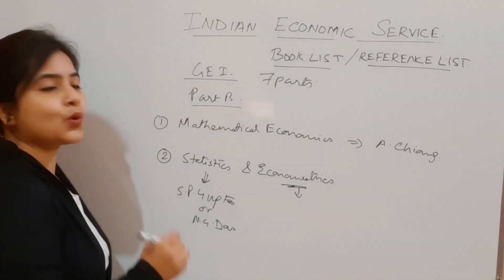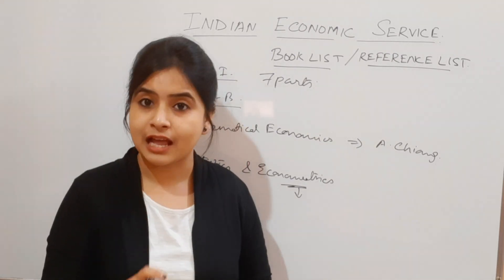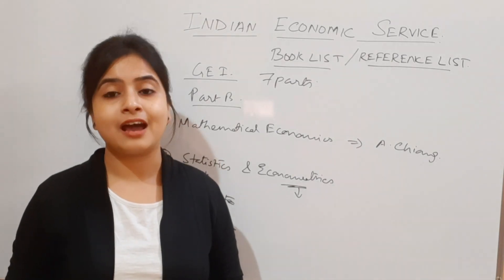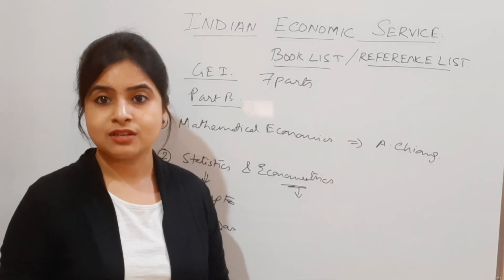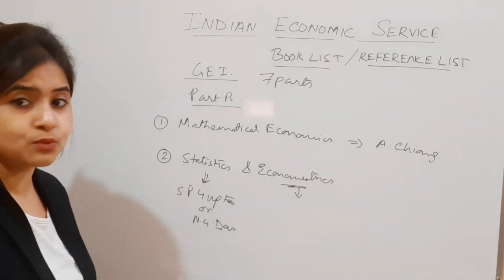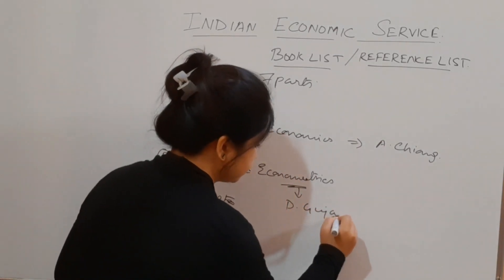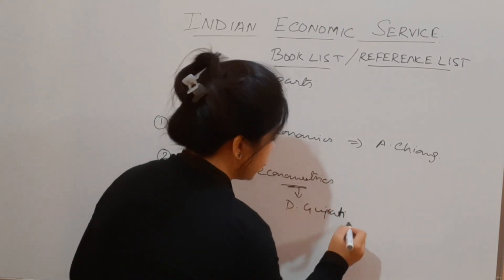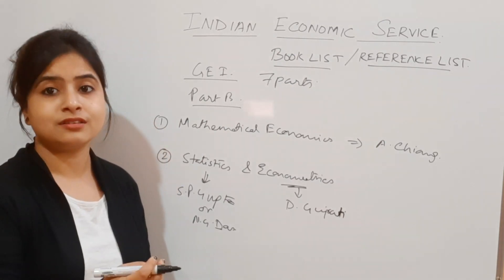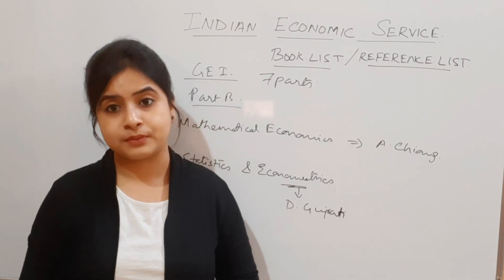For econometrics, there is one book that will help you most for the Indian Economic Services preparation. Since you do not need advanced theory for the econometrics portion — it is confined to general usage of econometrics — the best book is Damodar Gujarati. It is simple in language, easy to understand, and also contains exercises useful for your preparation strategy.